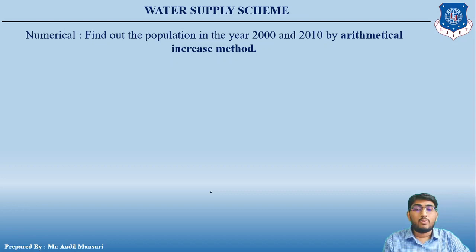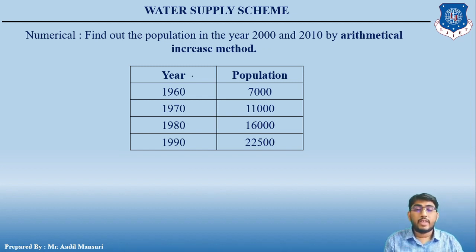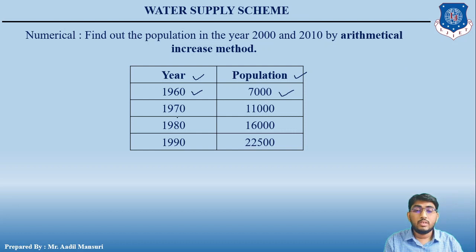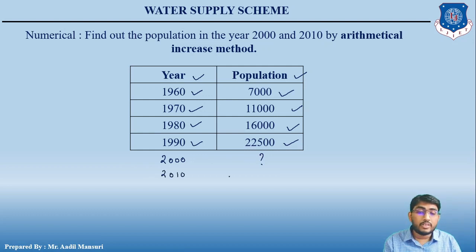The question asks us to find the population in the year 2000 and 2010 using the Arithmetical Increase Method. A table is given with year and population data: in 1960 the population was 7,000; in 1970 it was 11,000; in 1980 it was 16,000; and in 1990 it was 22,500. We need to find the population in 2000 and 2010.